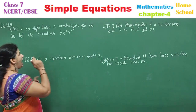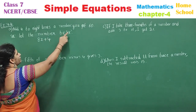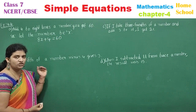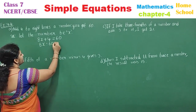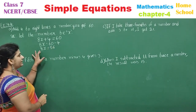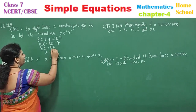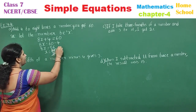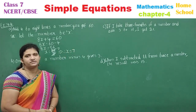Now read the statement again: 8 times a number is 8x, plus 4, equals 60. Framing the equation is complete. Now solve: transpose plus 4 to the other side as minus 4. So 8x = 60 − 4 = 56. Since 8 is a multiplier, divide: x = 56 ÷ 8. Since 8 × 7 = 56, x = 7.